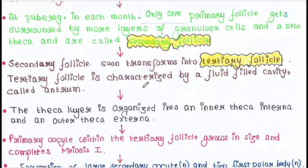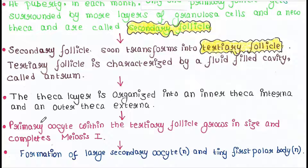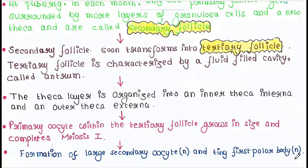The tertiary follicle is characterized by a fluid-filled cavity called the antrum, and the theca layer is organized into an inner theca interna and an outer theca externa. The primary oocyte within the tertiary follicle grows in size and completes the first meiotic division. After completion of the first meiotic division, two cells are formed: one is the larger secondary oocyte and the other is a very tiny first polar body.